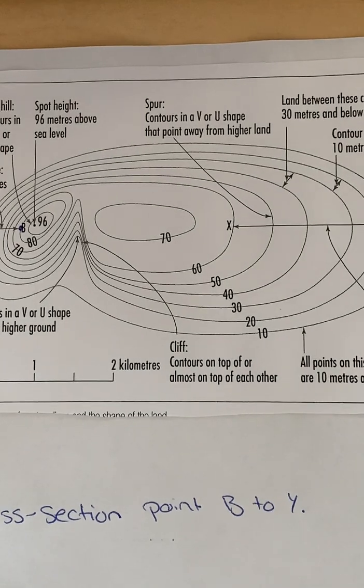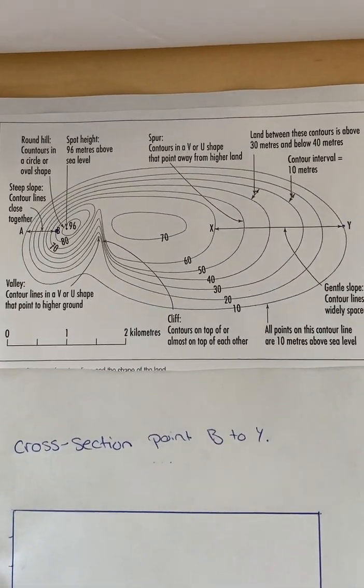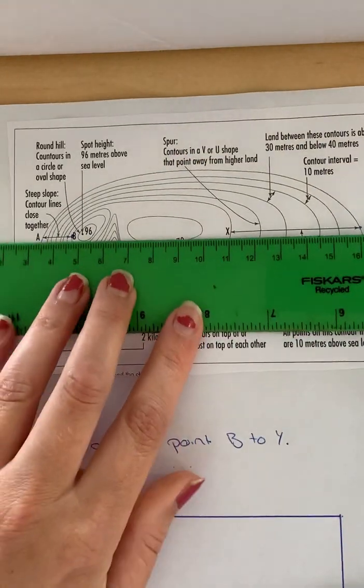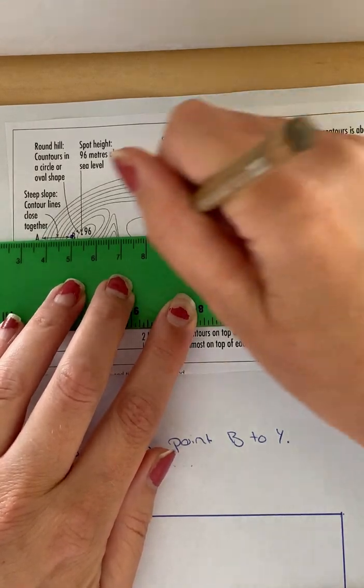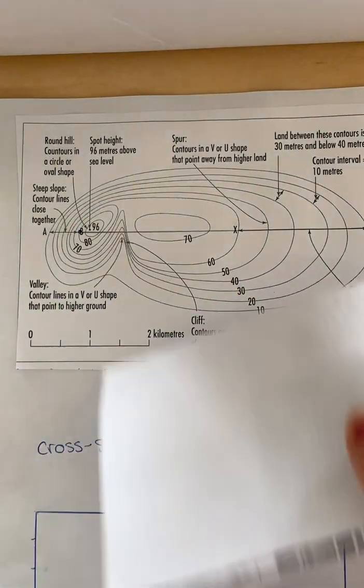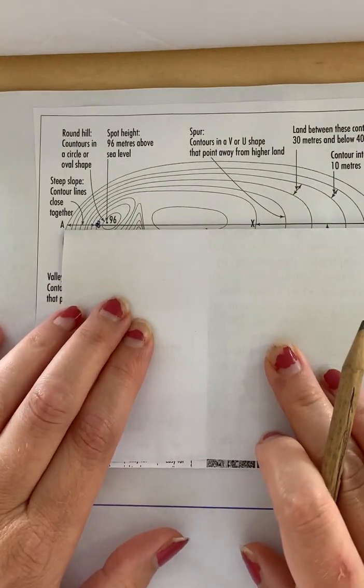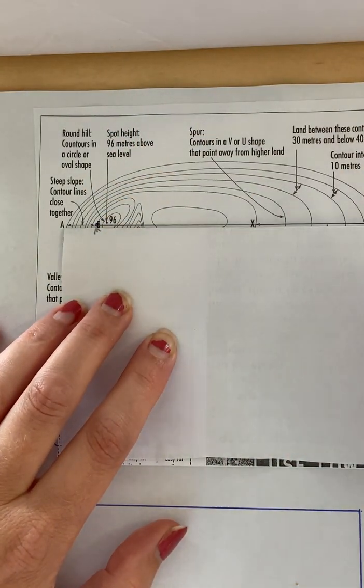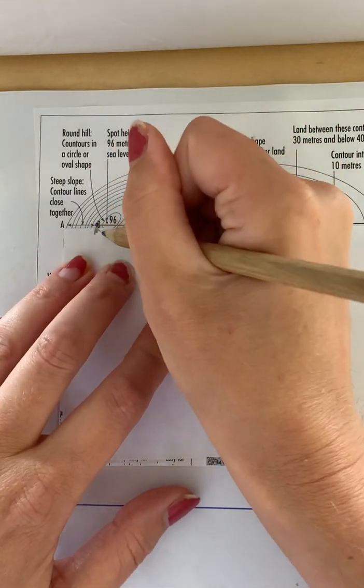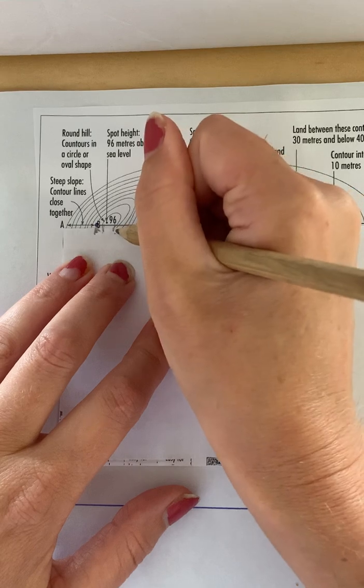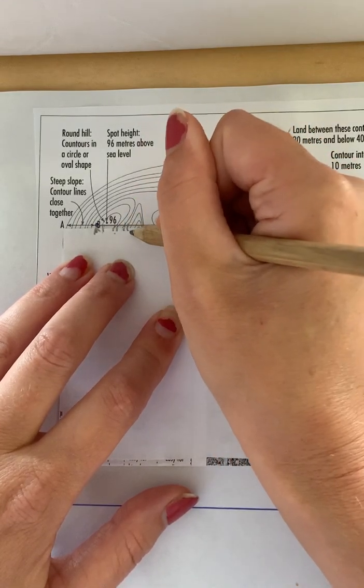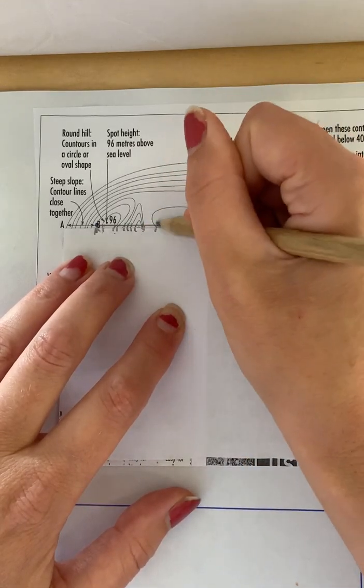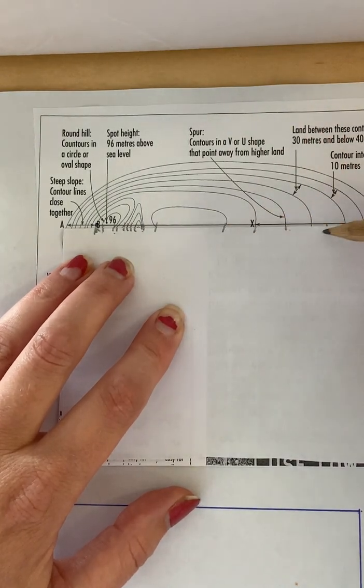So I'm going to zoom in and show you what we're going to do. To draw this cross section, we're going to do it from point B through to point Y. So the first thing we need to do is establish point B and point Y on the map, and we're going to draw a little line. Then we're going to pop a piece of paper up against that line, and every single time one of your contour lines hits your piece of paper, I just want you to mark it. So go along and mark every single time. When they're really close together, it is going to look incredibly messy, but that's okay. You don't get marked on this piece of paper.